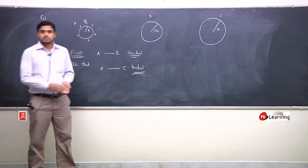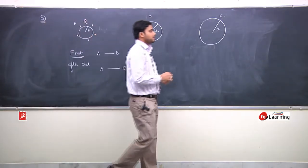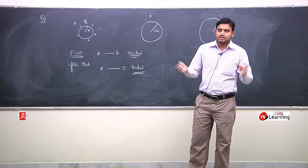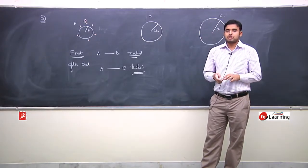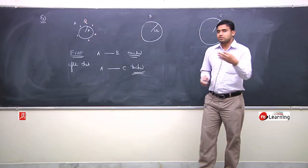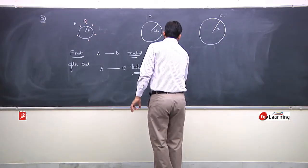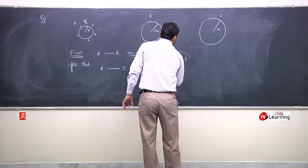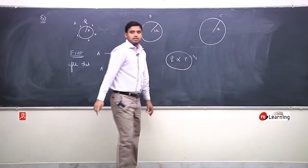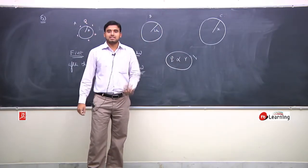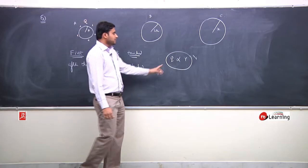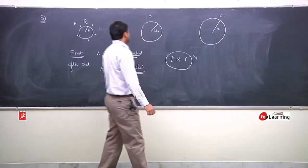Ab yaad karo. Kuch classes pehle maine bataya tha, ki do conductors ko agar aap connect karte ho, do conducting spheres, to finally dono ka jo charge hoga, final charge, that is proportional to their radius. Aur surface charge density, inversely proportional hoti radius ke. Final charge, radius ke proportionate.